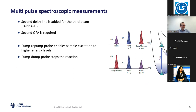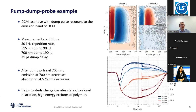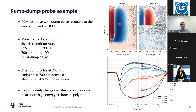For such a method you need another delay line — this is called a dump beam — and you also obviously need another OPA, so you need two OPAs to do it. The example here is the same DCM dye. It's fast, so it's interesting to study. You can see that the first spectrum is a regular pump-probe. On the right spectrum we add the dump pulse, which is at around 700 nanometers. You can see that the blue light shows it emits light — absorption is negative, so it emits at 700 nanometers. If we hit the DCM sample with a 21 picosecond time delay, we can stop the reaction happening inside the DCM.